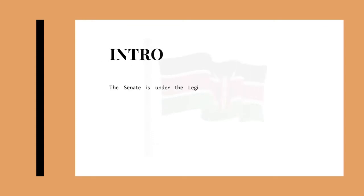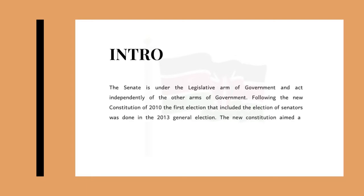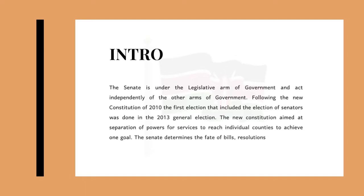So we will jump straight to the introduction. The Senate is under the legislative arm of government, acting independently of the other arms of government. Following the new constitution of 2010, the first election that included the election of senators was done in the year 2013. The new constitution aimed at the separation of powers specifically for the individual counties.